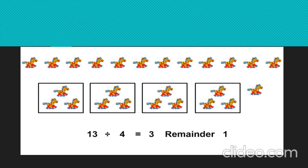Here, 13 toys are distributed among 4, and there is a leftover of 1. The leftover is called the Remainder. In this example, 13 divided by 4: here, 3 is the quotient and the leftover, that 1, is the Remainder.